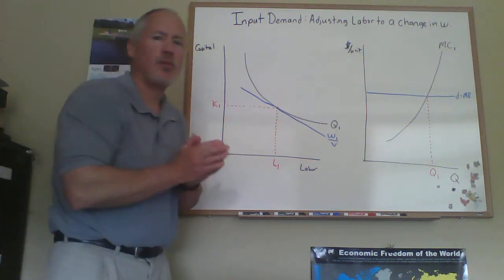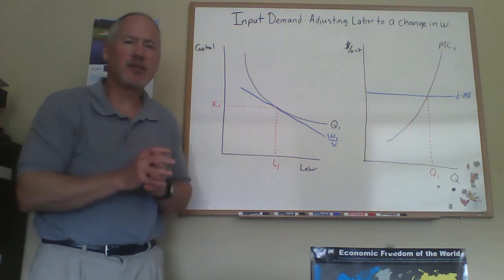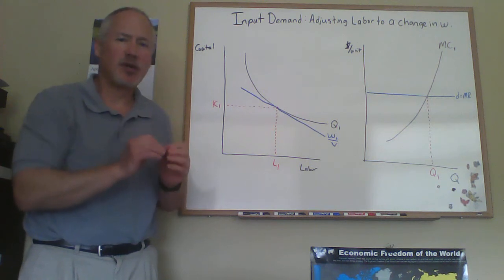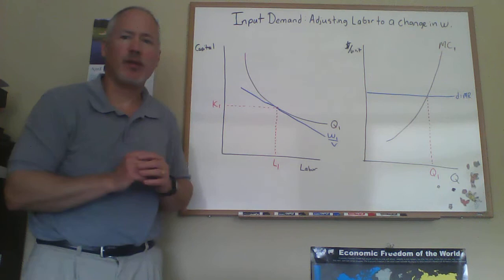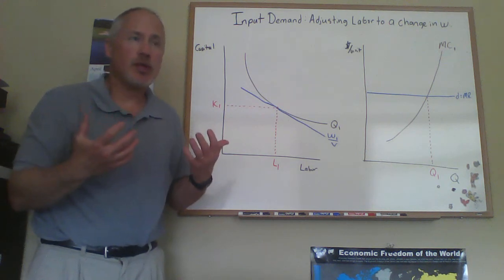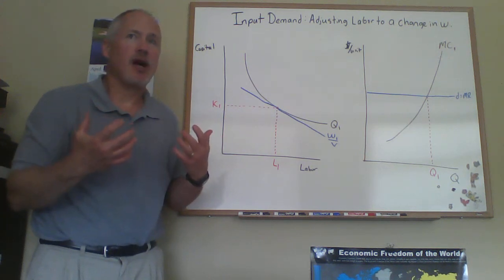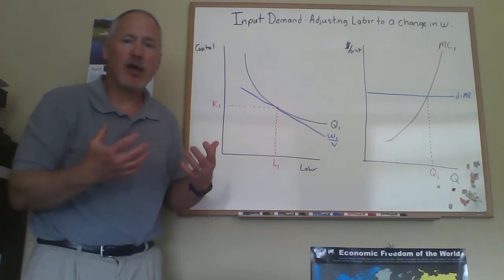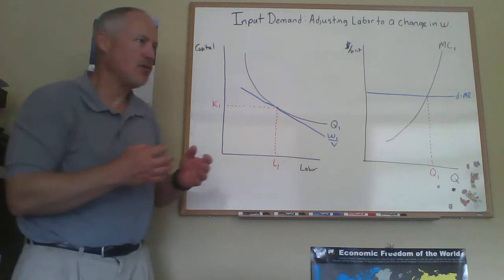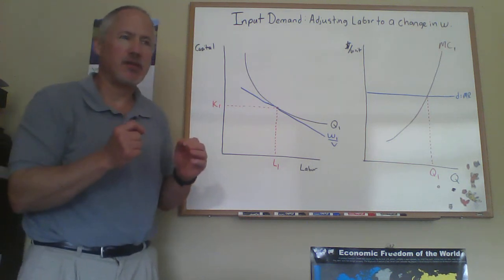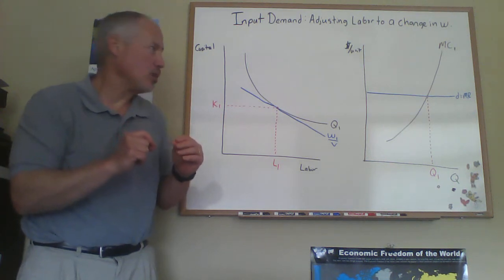Okay, so this video is going to show what happens, how a profit-maximizing, price-taking firm responds to a change in the wage of labor. This would really be, if you want to think about it, how you would derive the factor demand curve for a firm.